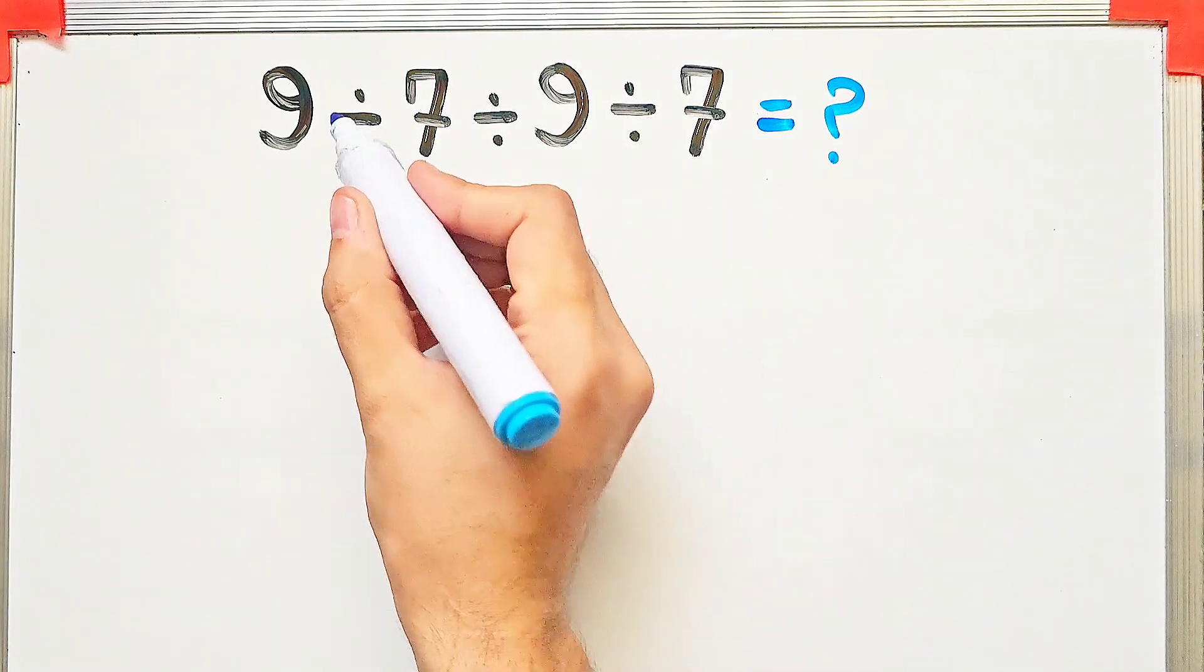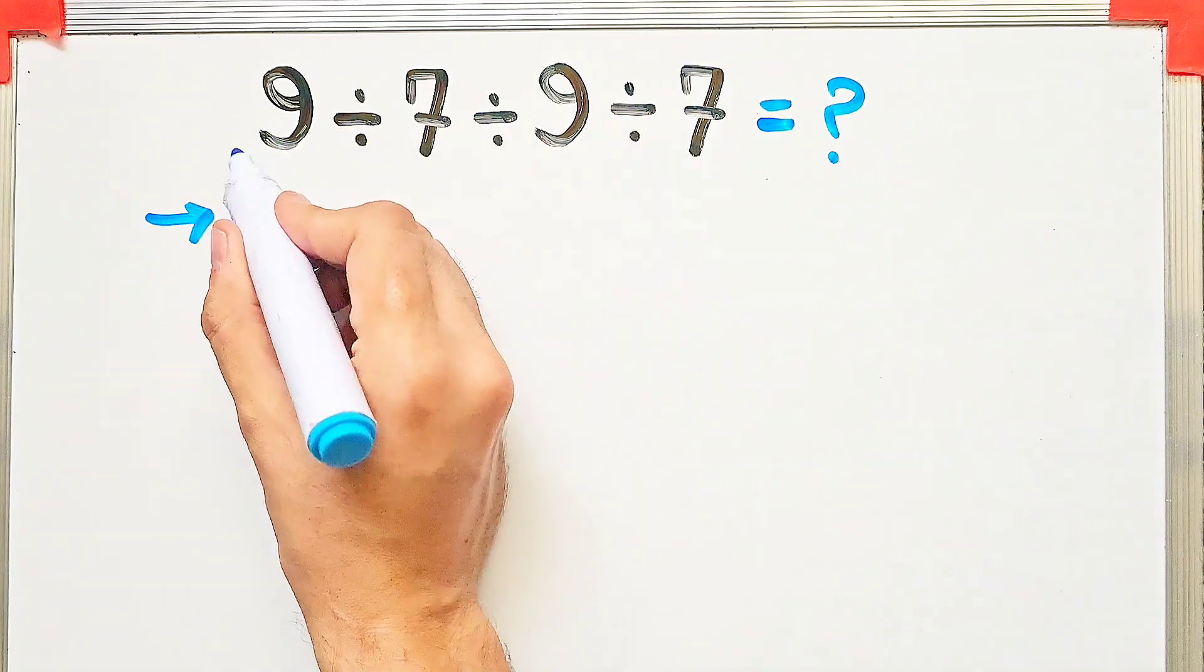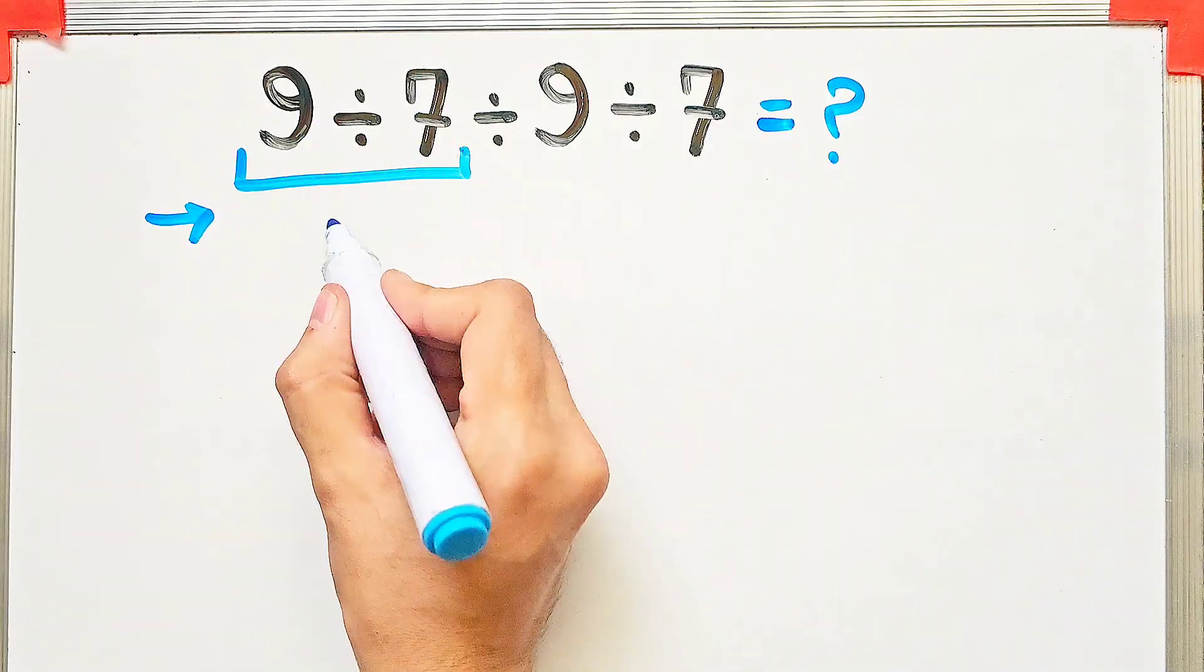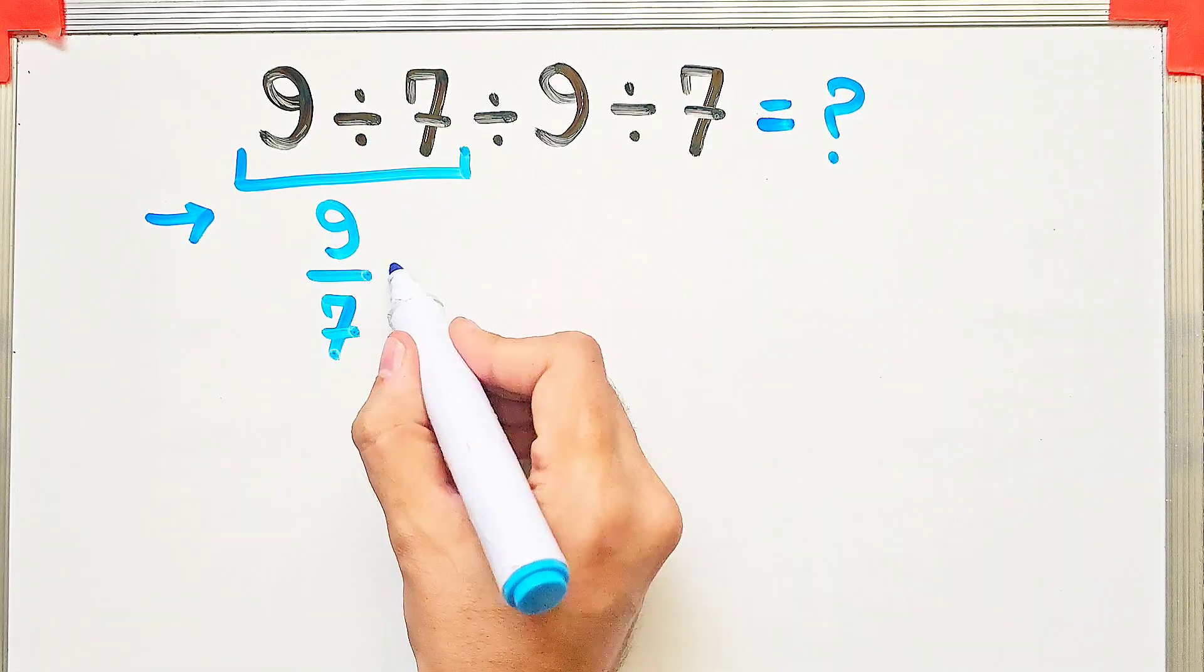Let's solve this question step by step together. Because we have 3 divisions, we start from the left and simplify. We have 9 over 7, then divided by 9, after that divided by 7.